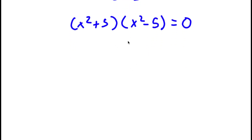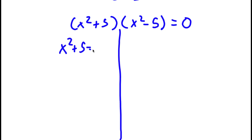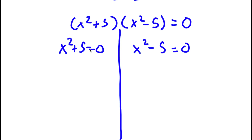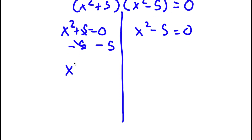This is actually going to give me two equations. I have x to the power of 2 plus 5 is equal to 0, and I have x to the power of 2 minus 5 is equal to 0. For x to the power of 2 plus 5 equals 0, I can simply subtract 5 on both sides, so these two cancel out, and I'll be left with x squared is equal to negative 5.